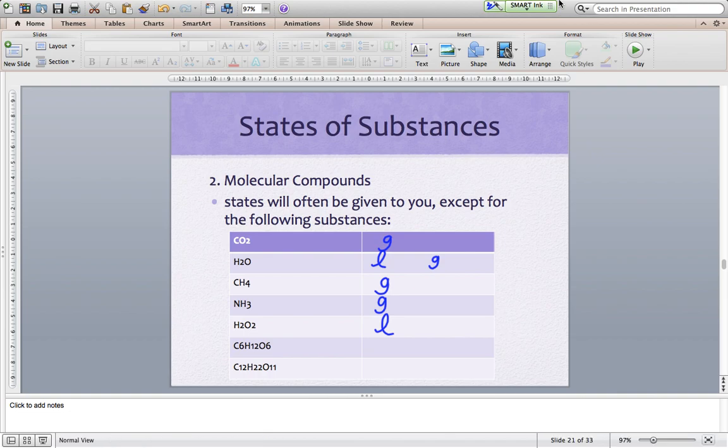And then our last two big compounds there, those are different kinds of sugars. We've got glucose and we've got sucrose. And those are both, as you might imagine, found as solids. So just a few things that you will be expected to know. And again, knowing this will make assigning states go a lot more quickly for you. So that's molecular compounds.